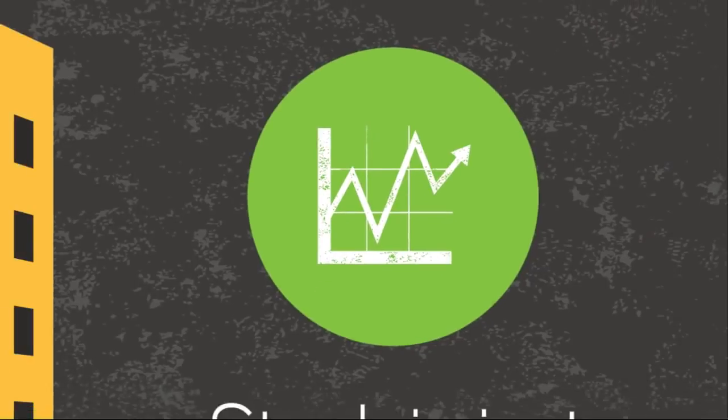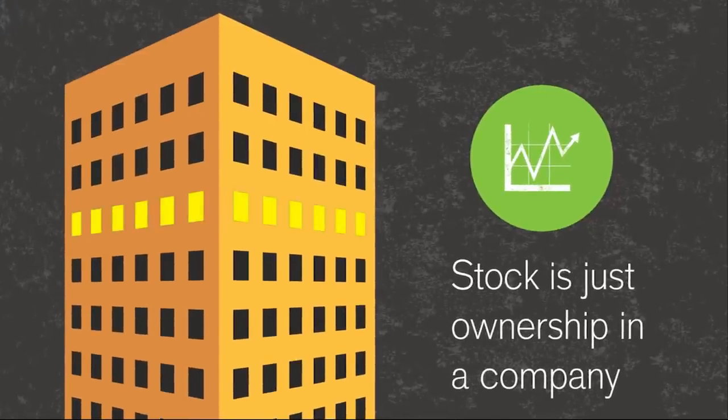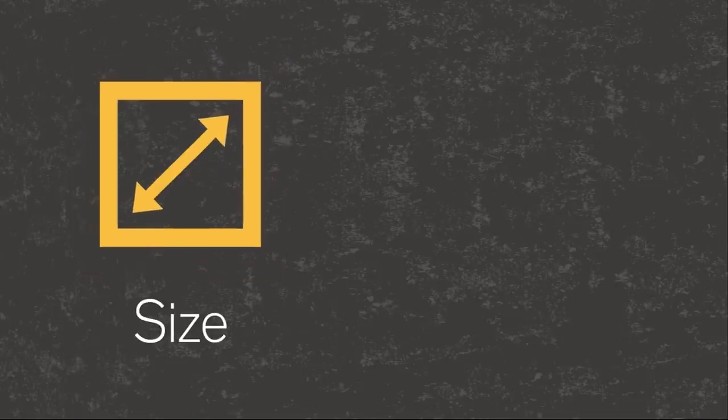Stock is just ownership in a company. There are many ways to classify stock. Two major ones are size, called market capitalization, or cap, and company location. Each classification has its own typical level of risk.